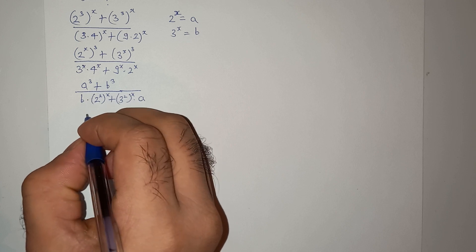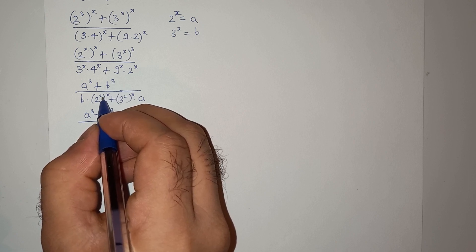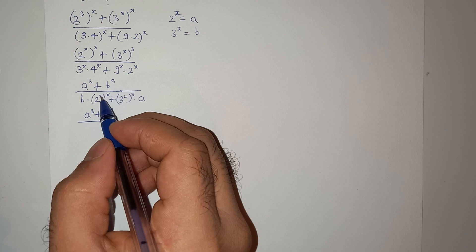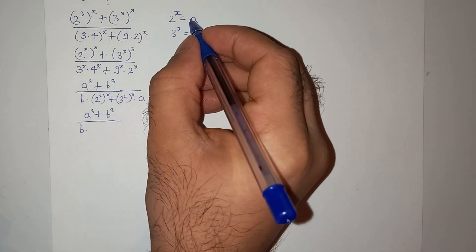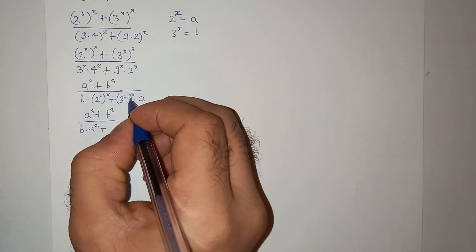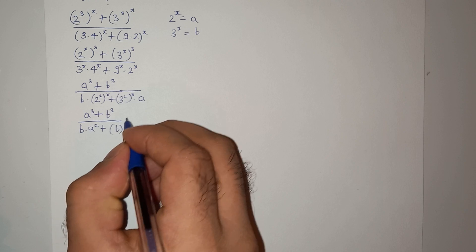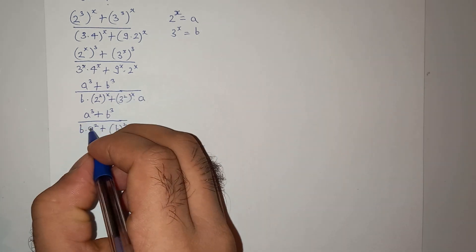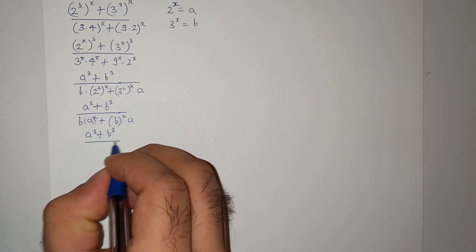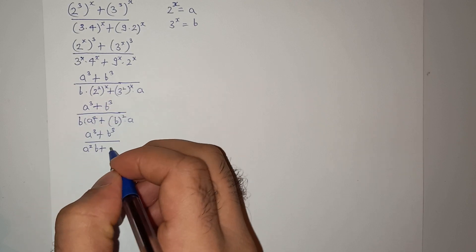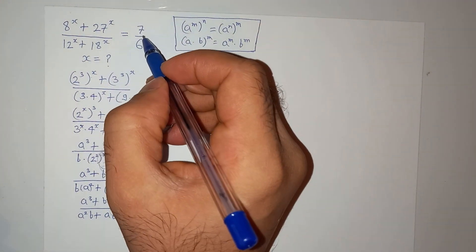So we can write a³ + b³ in the numerator. In the denominator, 4^x = (2^x)² = a², and 9^x = (3^x)² = b², so the denominator becomes a²b + ab². This gives us (a³ + b³) / (a²b + ab²) = 7/6.